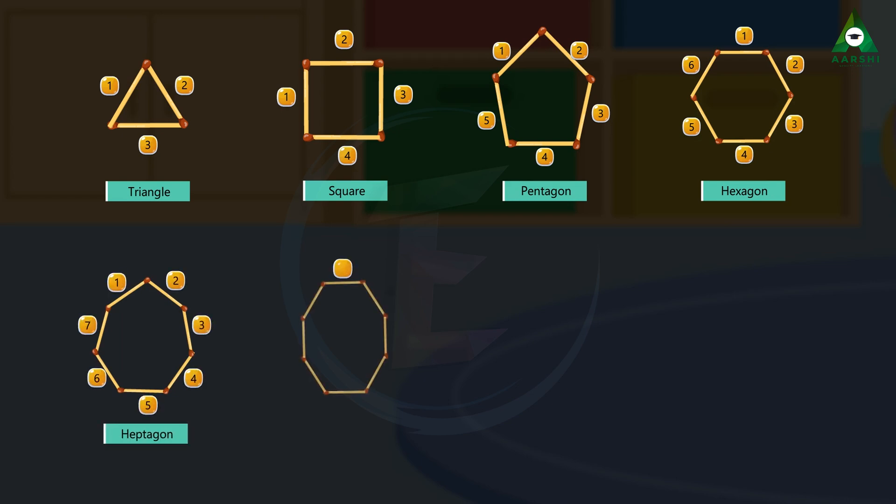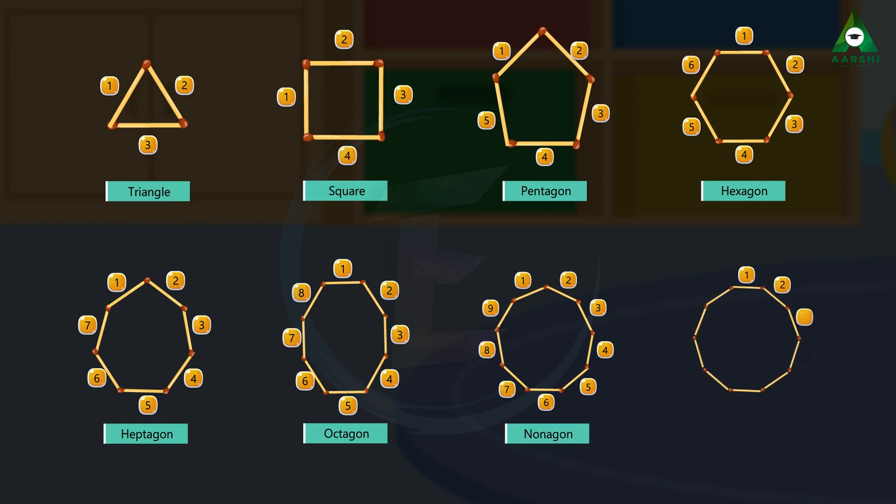Heptagon consists of 7 sides. Octagon is made of 8 sides. Nonagon is made of 9 sides. Decagon consists of 10 sides.